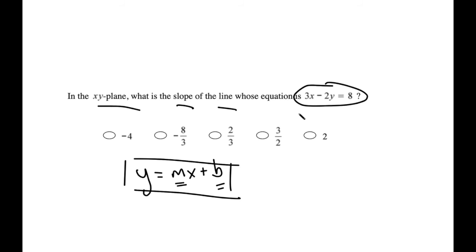I'm going to start out by subtracting 3x from both sides so I get y by itself. So I get negative 2y equals negative 3x plus 8. And then I'm going to divide both sides by negative 2.